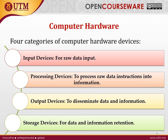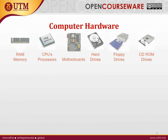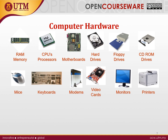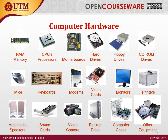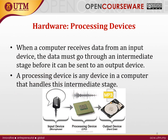Storage devices are responsible for keeping and saving data — information retention. For example, the hard disk and the pen drive are storage devices. As we can see in the picture, some computer hardware examples include RAM memory, CPU processor, motherboard, hard drive, floppy drive, CD-ROM, mouse, keyboard, modems, video cards, monitors, and printers — all hardware because they are physical and we can touch and see them.